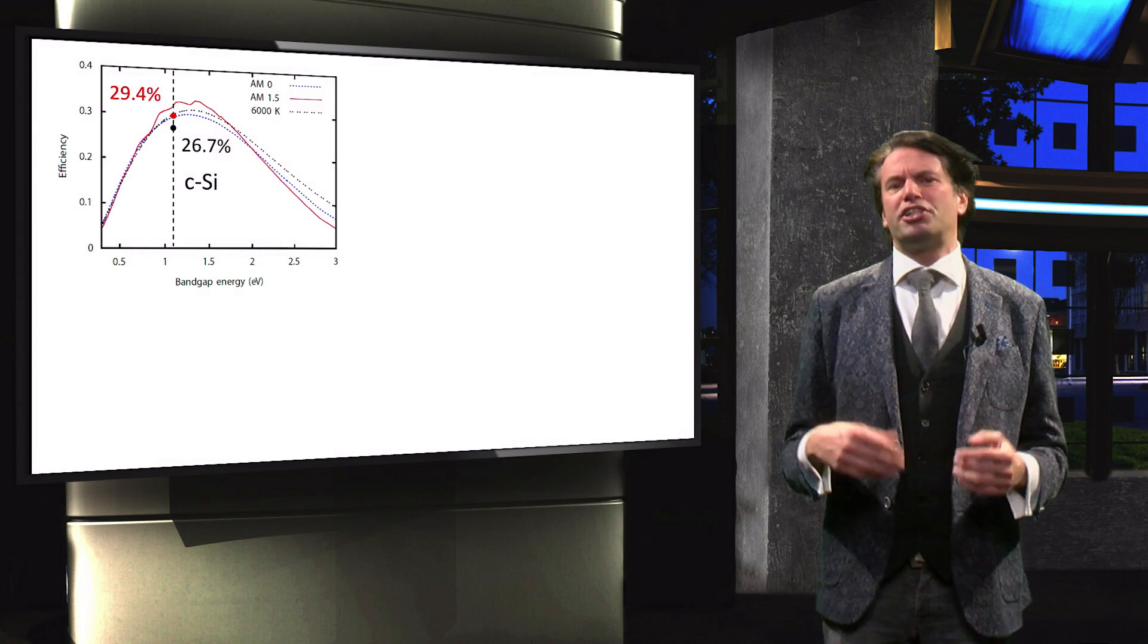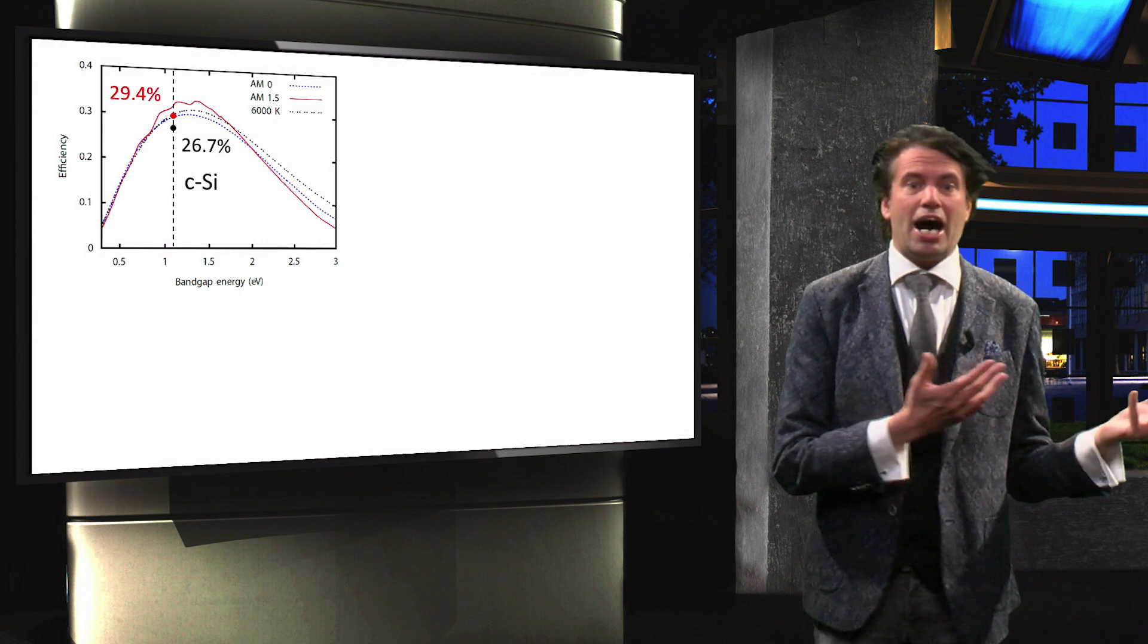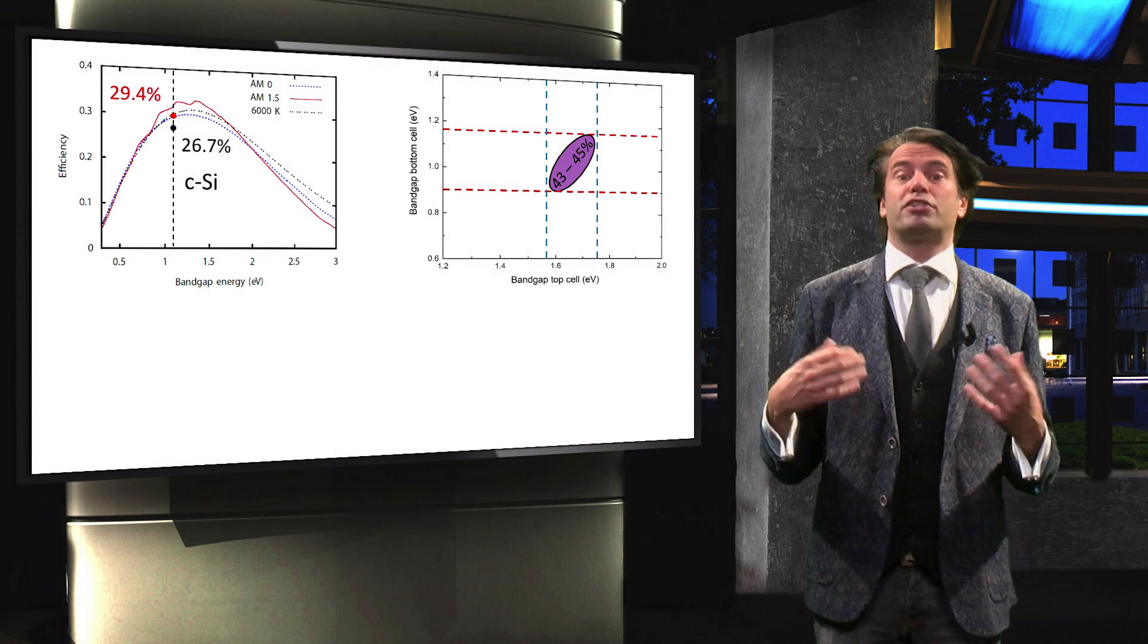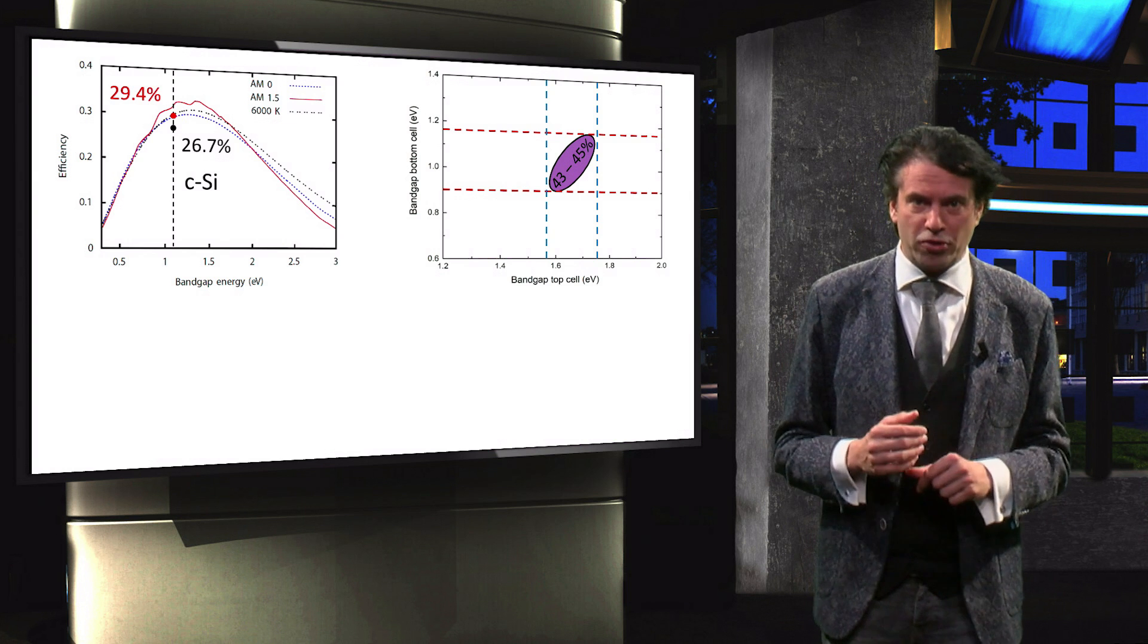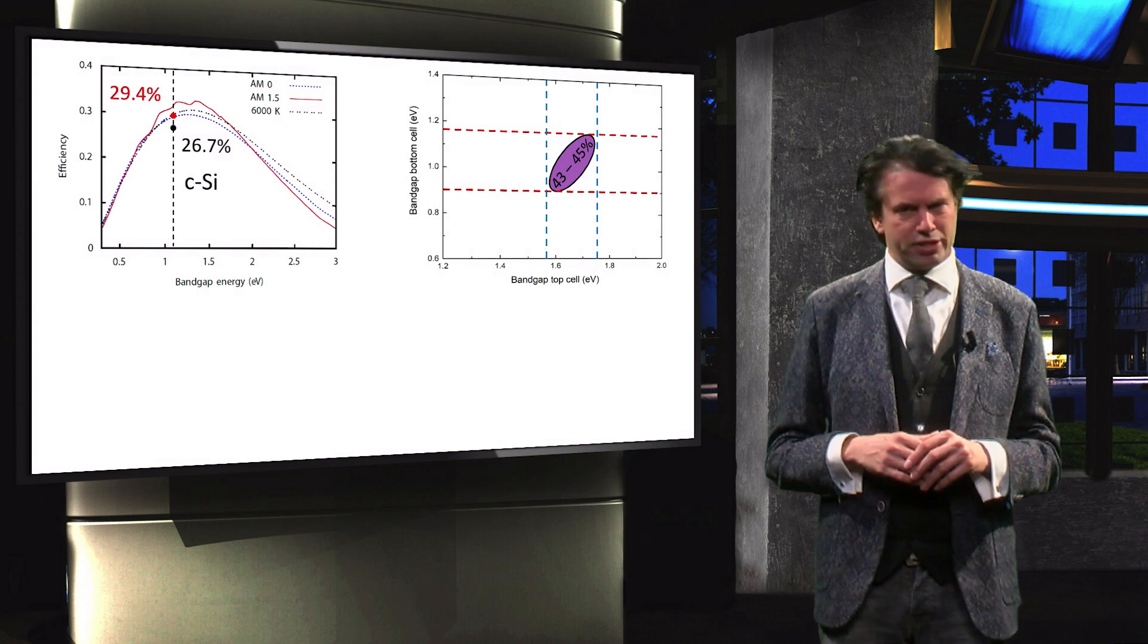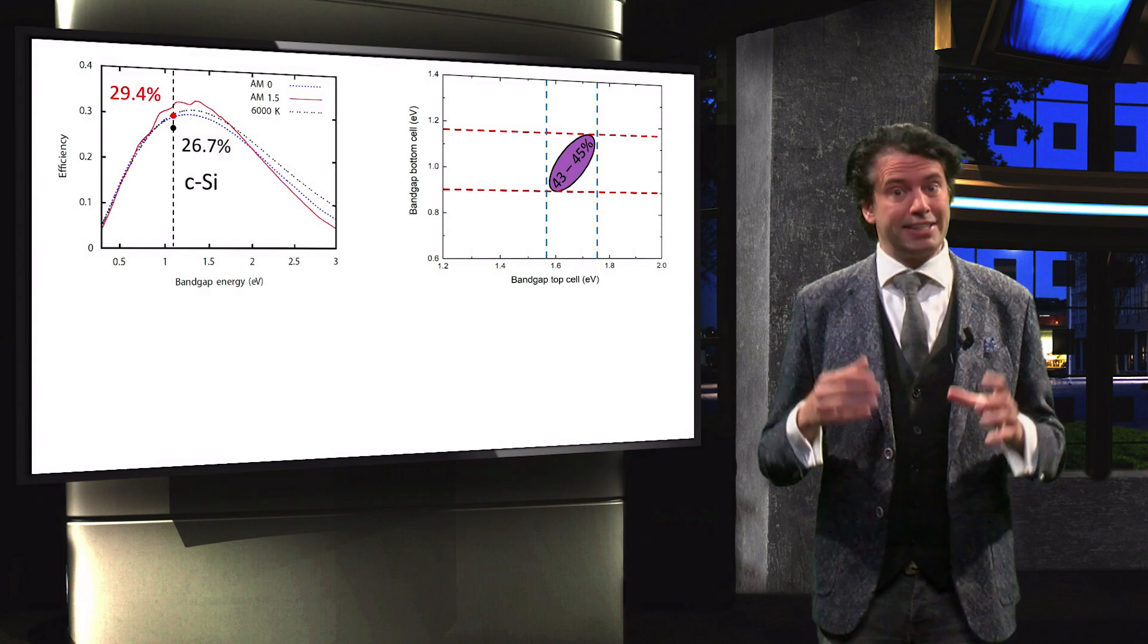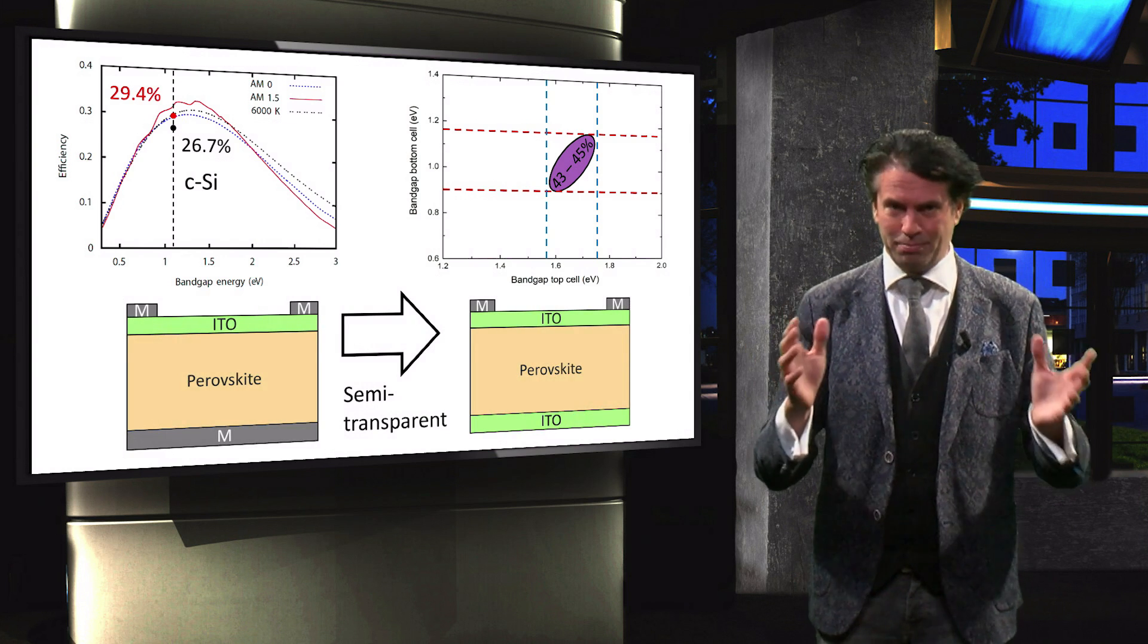In summary, we discussed the desire to combine the mature crystalline silicon PV technology with a high bandgap material to create highly efficient multi-junction devices. A crystalline silicon perovskite hybrid seems promising, since both are low-cost technologies and the bandgap of perovskite can be engineered so that it makes an optimal combination with the crystalline silicon. We discussed a record two-terminal tandem structure and a four-terminal mechanically stacked device, and we looked into the design considerations for these tandem devices.